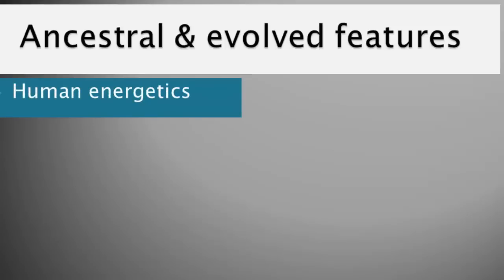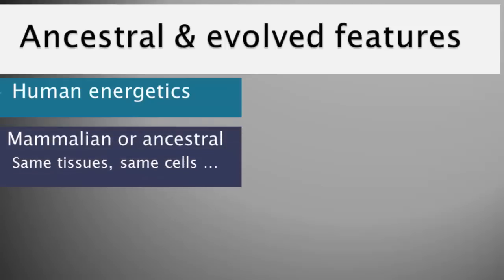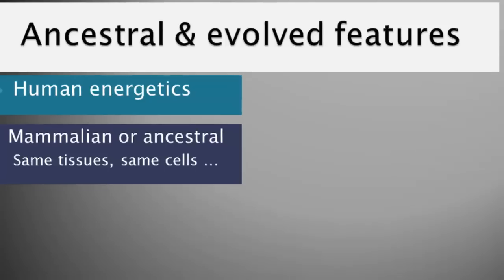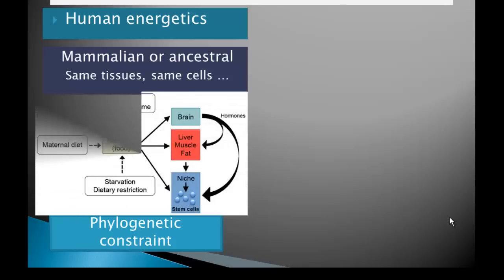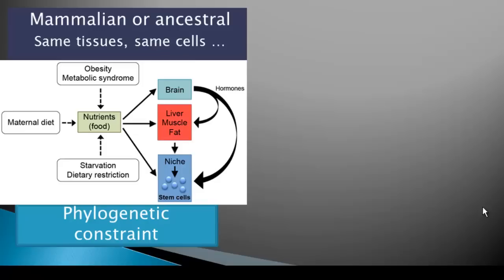An example of an ancestral feature of human life history is our basic energetics. The way that we process energy — the ways our cells and tissues work — is very much what would be expected for a mammal of our size. This is called a phylogenetic constraint. The way that brains, livers, muscle, and fat operate in humans, along with our hormonal systems, when we get down to the cellular level and energetics, we're very much just another mammal.